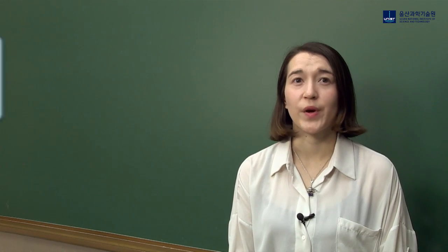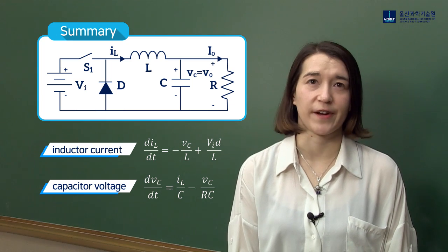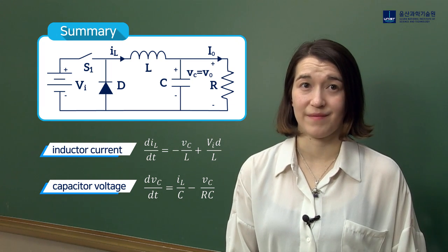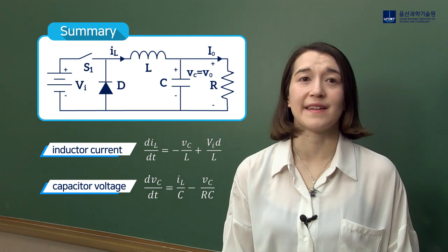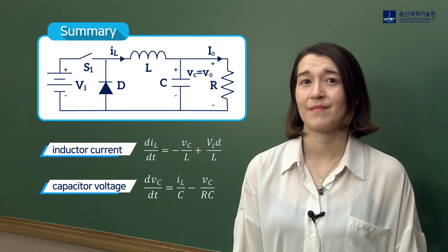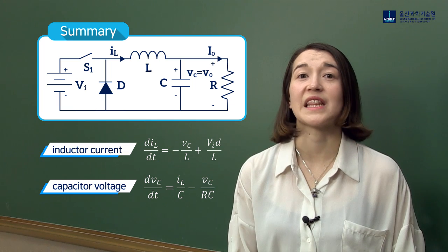So here we have our two dynamic equations for the buck converter. From the derivation, we now have equations for the average dynamics of the two states in our buck converter, the inductor current and the capacitor voltage. These same steps can be applied to any DC-DC converter to find their dynamic state equations. The next step is to use these state equations and linearize them.